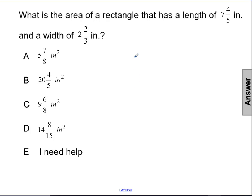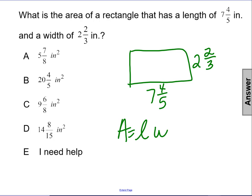If I draw a diagram of my rectangle, I have seven and four-fifths as a length, two and two-thirds as a width. I refer to my rectangle formula.